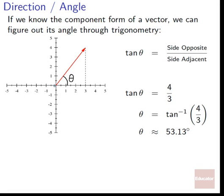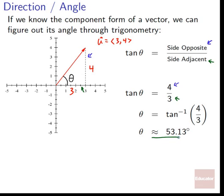Direction and angle: if we know the component form of a vector, we can figure out its angle through trigonometry. With U equals ⟨3, 4⟩, we use tan θ equals side opposite over side adjacent. Our side opposite to angle θ is four and our side adjacent is three, giving us tan θ equals four over three. Taking the arctan of both sides, θ equals arctan(4/3), which is approximately 53.13 degrees.